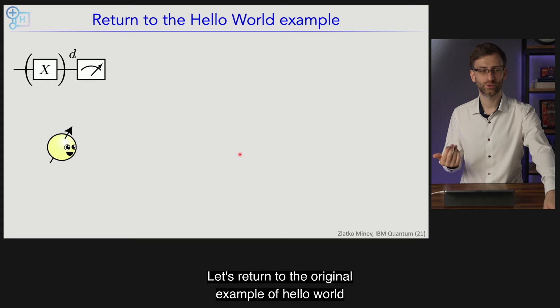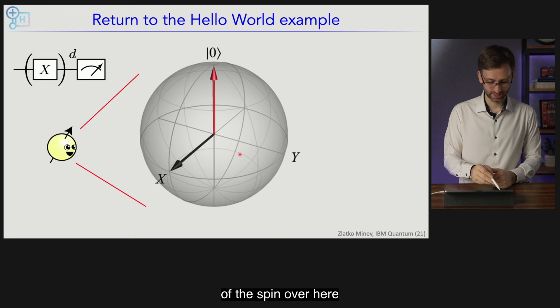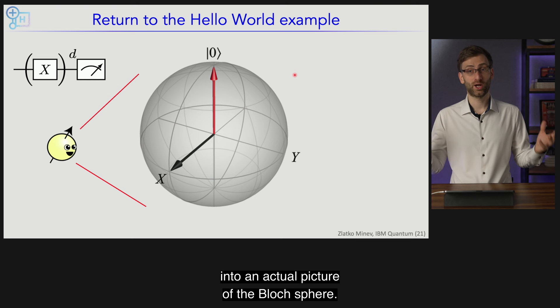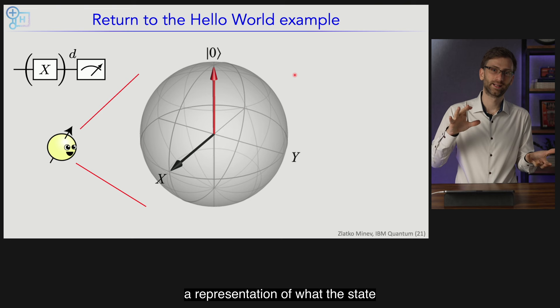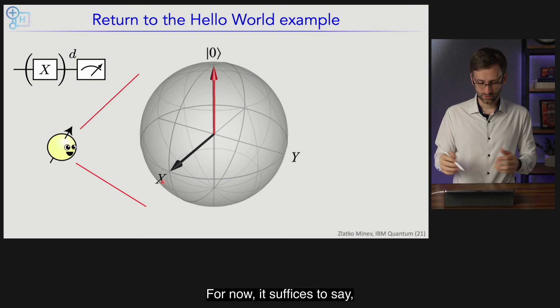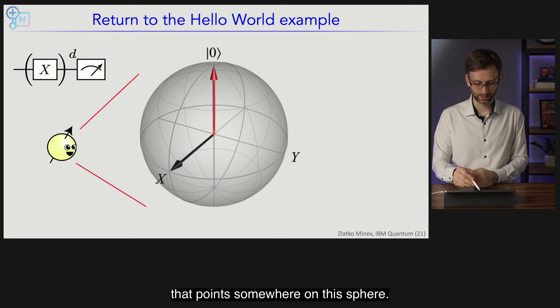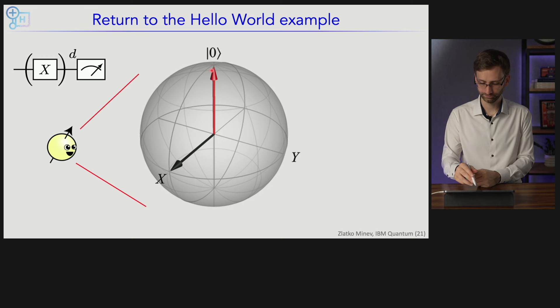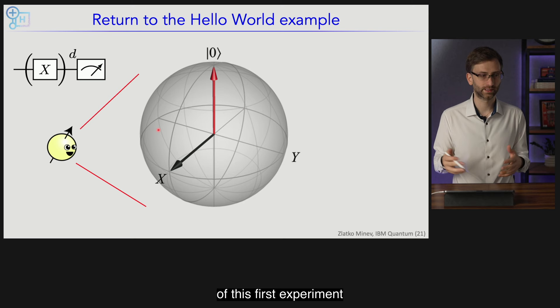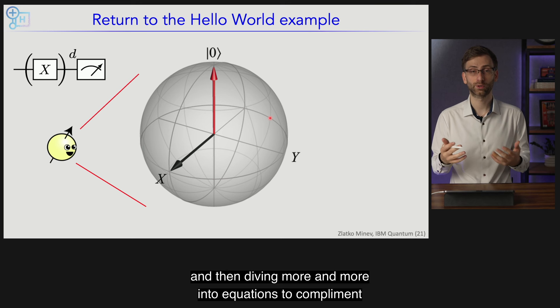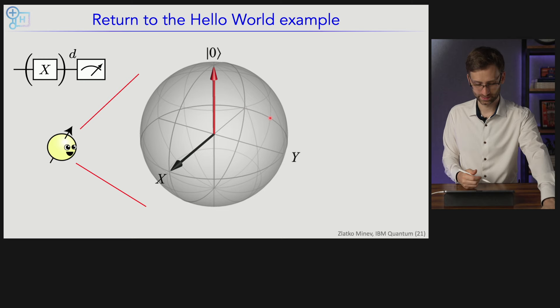Jumping into coherent noise. Let's return to the hello world example and expand our cartoonish picture of the spin into an actual picture of the Bloch sphere — a representation of what the state of the quantum system can be. Our quantum state is an arrow pointing somewhere on this sphere, with the red arrow showing that our qubit is in the ground state. We'll understand the dynamics of this first experiment through the lens of the Bloch sphere, first pictorially, then diving into equations to complement and generalize.